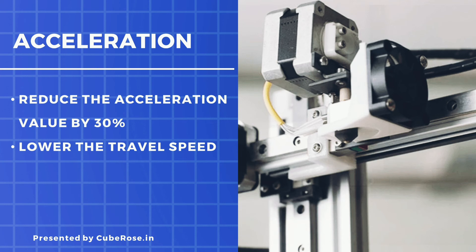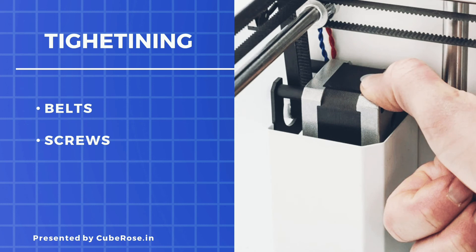Tightening belts and screws: after a decent amount of printing, it is highly possible that the belts can become sloppy. Since belts are essential to moving the print head from one place to another at a decent speed, they must be tightened. This will help to eliminate any issue induced by the sloppiness of belts. Tightening the belts and screws in my 3D printer has helped me a lot. Do not miss tightening the screws attached to the build plate — it is advisable to tighten every single thing on your 3D printer that might cause unnecessary vibration.